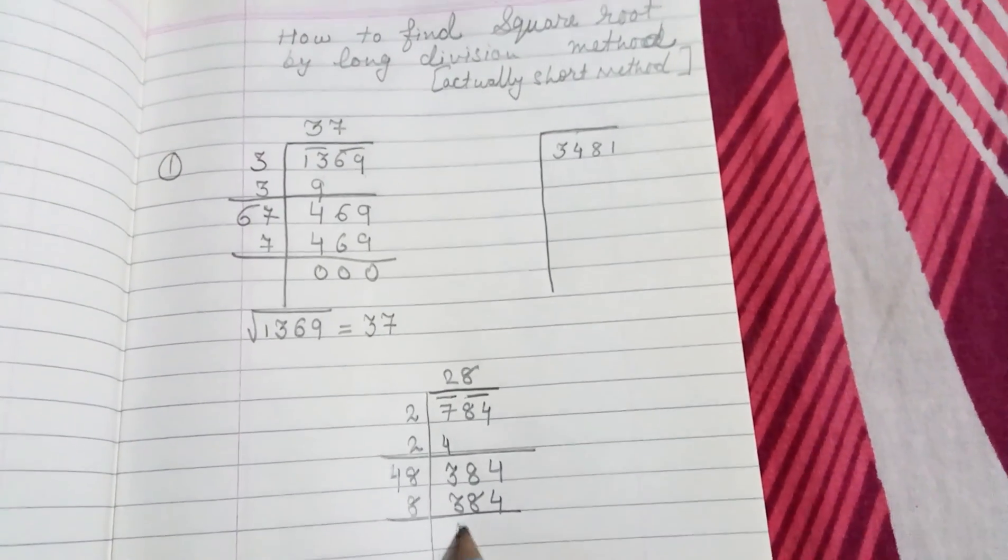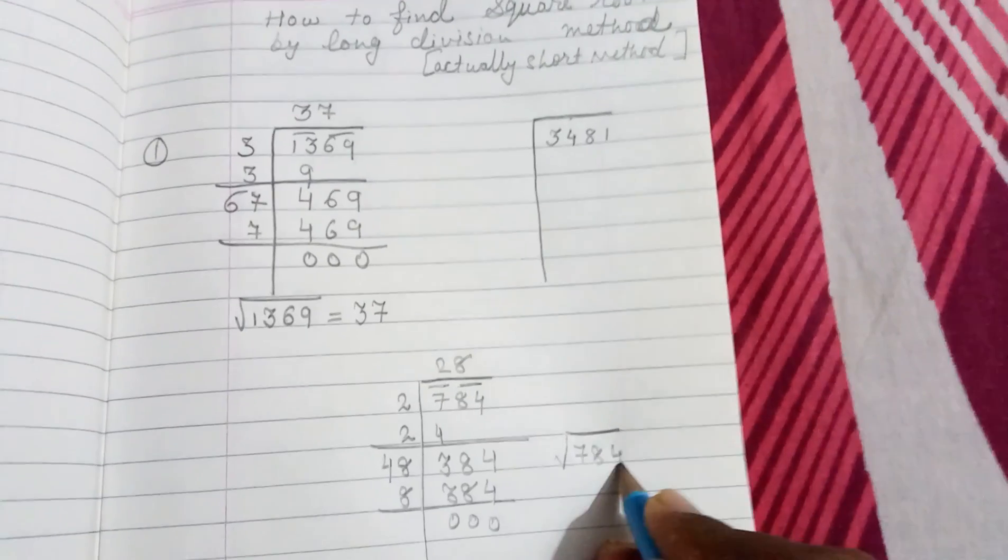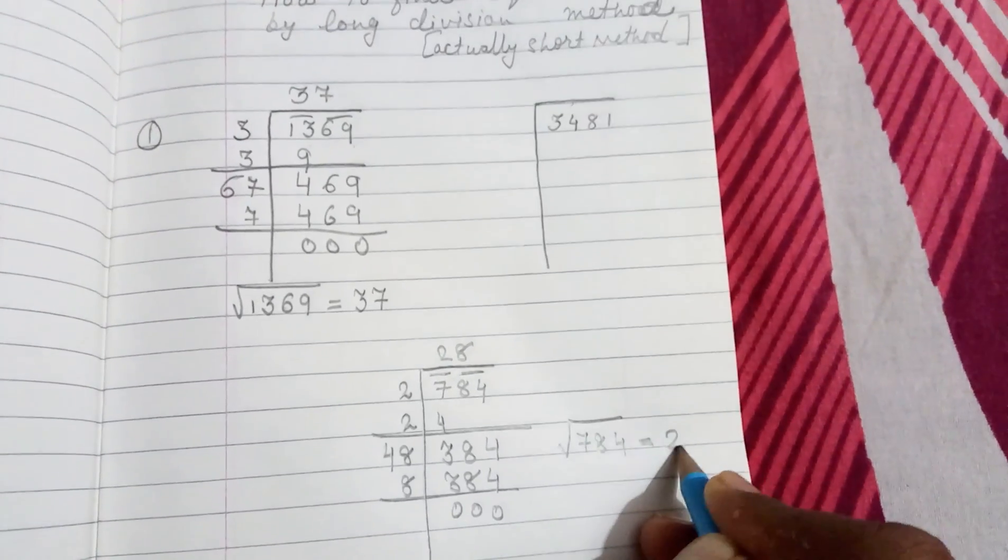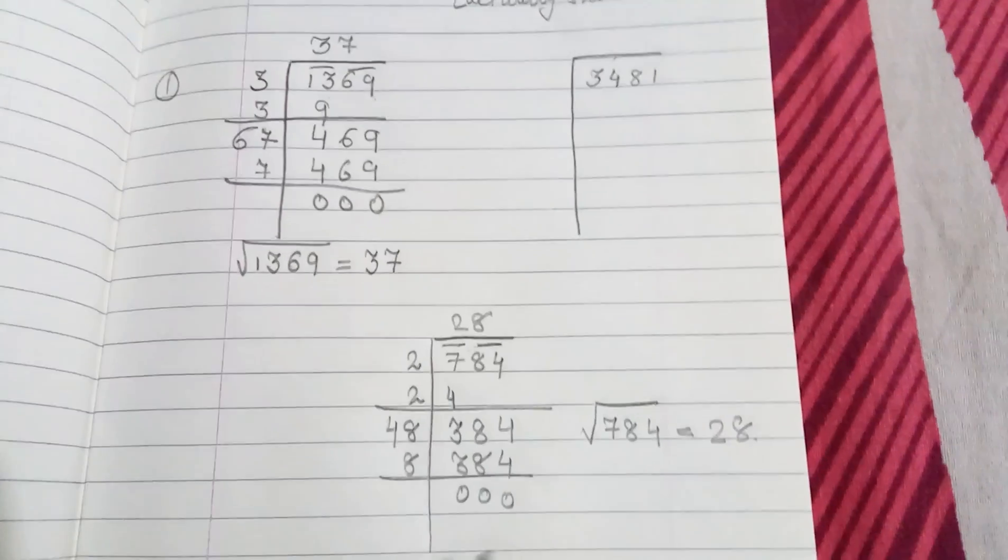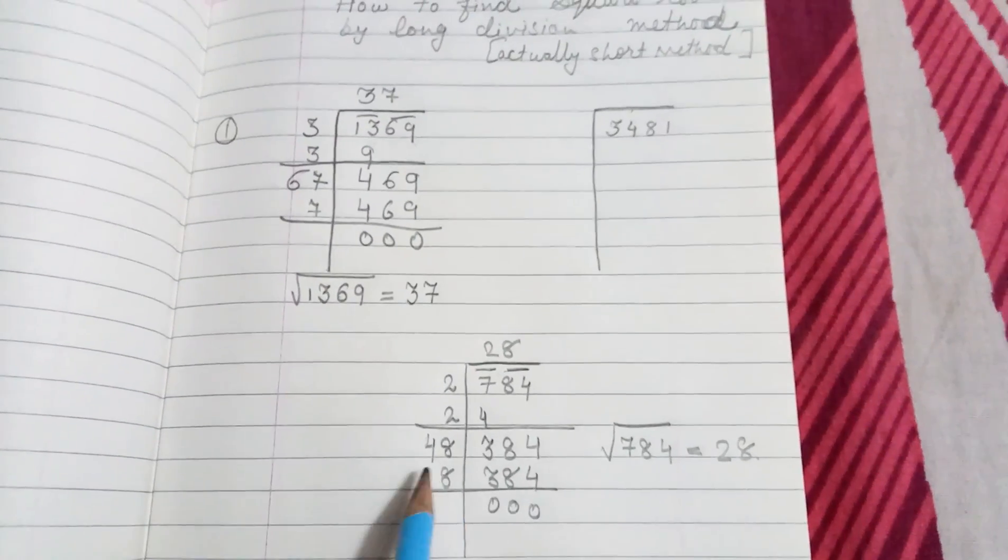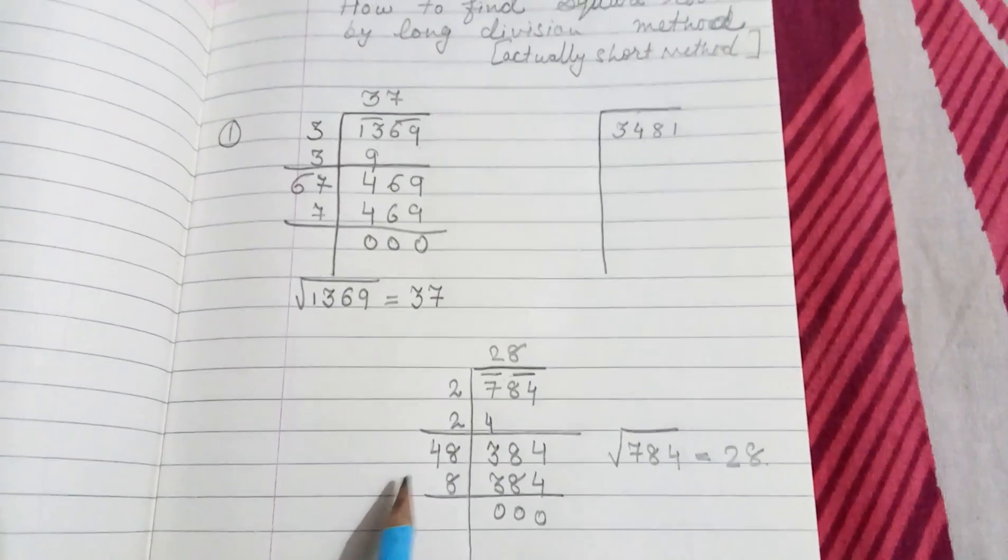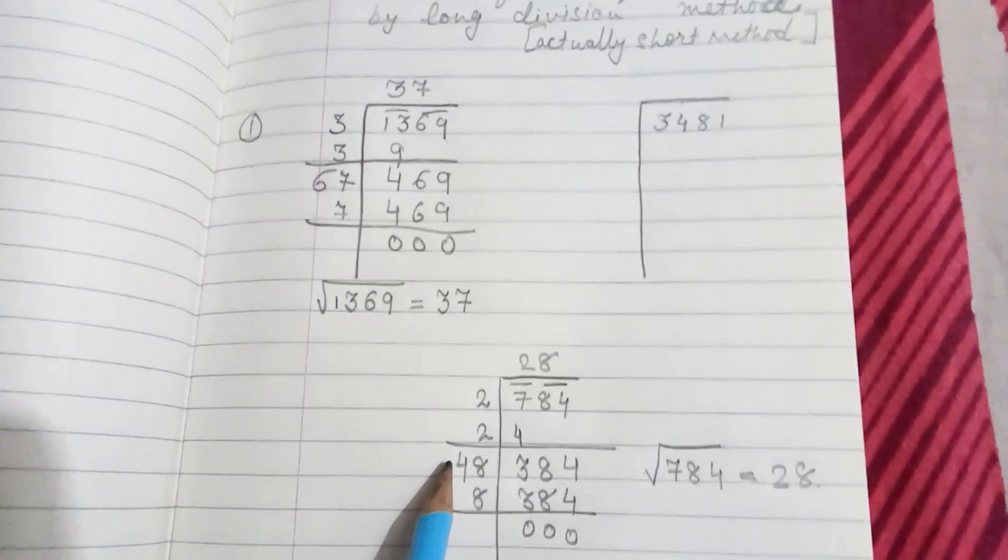Remember that 0, 0. The square root of 784 is equal to 28. So in this way we can find the square root of any of the numbers by long division method, which is actually very short. Hope you all like this, thank you.